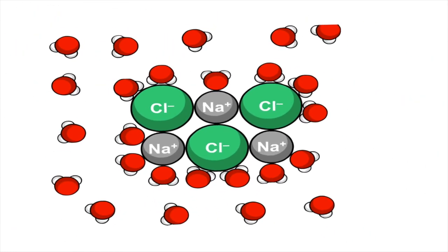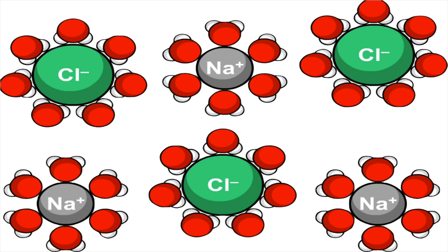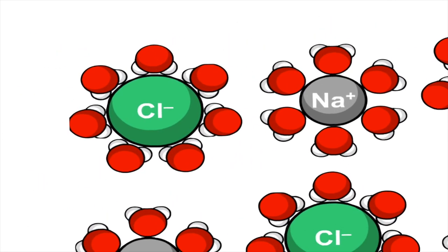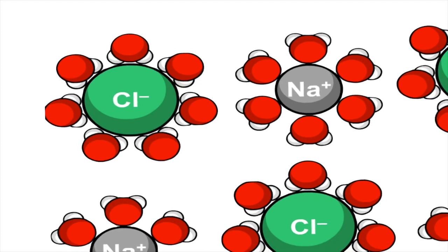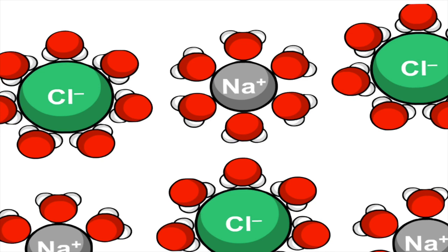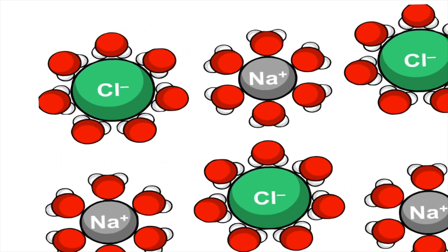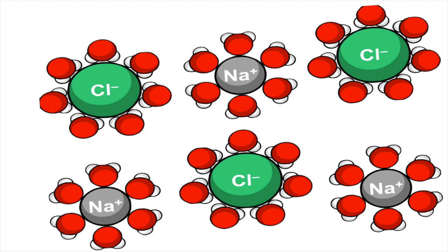The dipole nature of water explains why it's a very good solvent. Every ion becomes surrounded by layers of water molecules. You really have to watch the orientation because it's unique — the oxygens are pointing towards the sodium and the hydrogens are pointing towards the chloride. These layers of water around the ions are known as hydration shells.